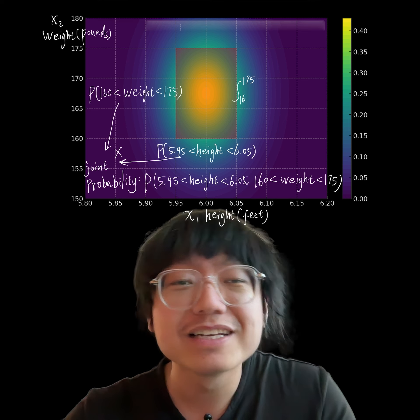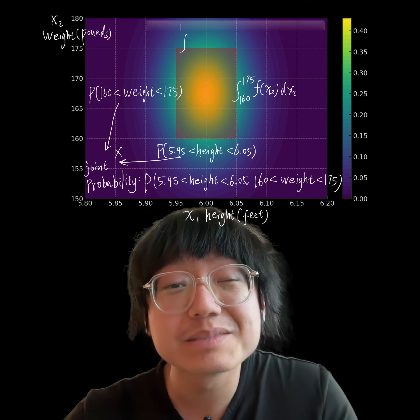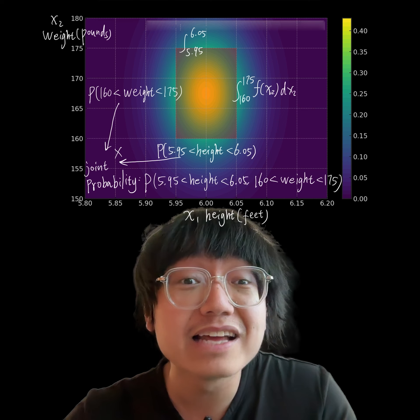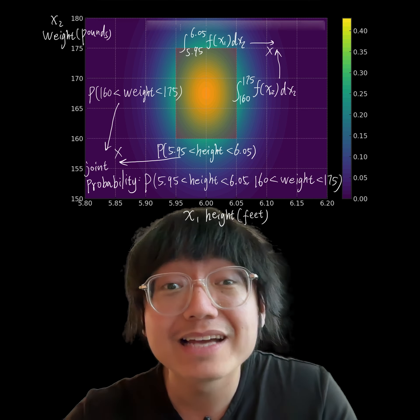The double integral is given by this mathematical formula. The probability of the height being between 5.95 and 6.05, and the weight being between 160 and 175...